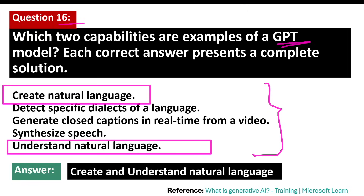Some capabilities of GPT models include: creating natural language, understanding natural language, detecting specific dialects of a language, synthesizing speech, and generating closed captions. Creating natural language means GPT models can generate coherent and contextually appropriate text based on the input they receive. Understanding natural language means these models can comprehend the meaning behind text, allowing them to respond accurately to queries and conversations.